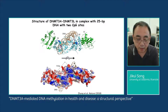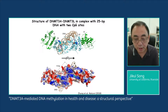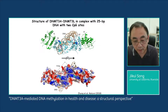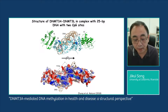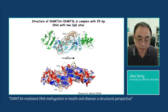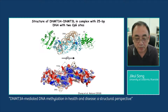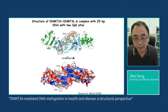Our later biochemical analysis demonstrated that in solution, the CpG methylation spacing for DNMT3A as well as DNMT3B is dominantly 14 base pairs, rather than 10 base pairs. However, the functional implication of this 14-base-pair CpG spacing remains unclear.